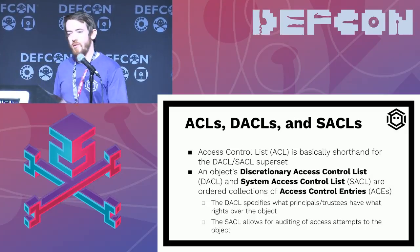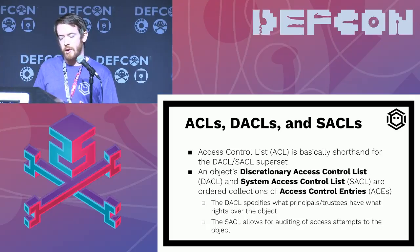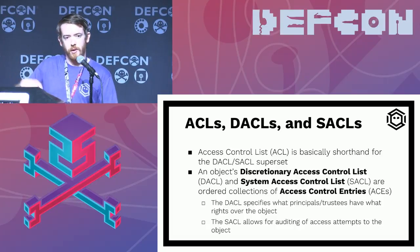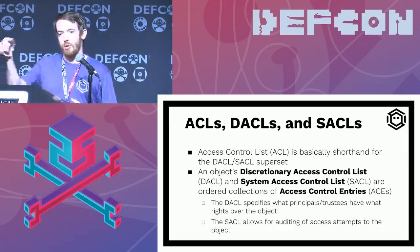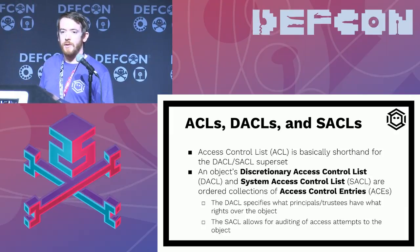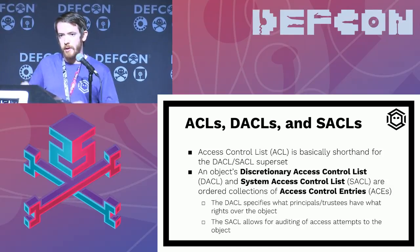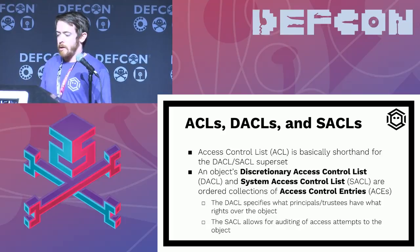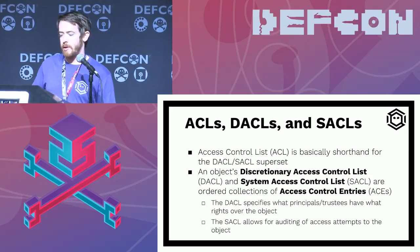If you're not familiar with Active Directory or the access control model: people throw around ACL, DACL, SACL and use them interchangeably. The access control list (ACL) is essentially shorthand for the DACL and SACL superset. The discretionary access control list and the system access control list are ordered collections of access control entries. The DACL specifies what principals or trustees have what rights over an object. The SACL allows for auditing of access attempts. We're mostly going to cover the DACL.